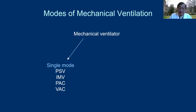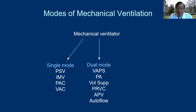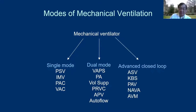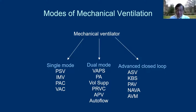Then there is the so-called dual mode — these are the VAPS mode, pressure augmentation or PA, volume support, and pressure regulated volume control (PRVC), which is pretty popular. It's called dual mode because there is a feedback loop. Most of the time tidal volume is used as a feedback parameter to maintain a minimum tidal volume. Then there's more complicated advanced closed-loop modes — adaptive support ventilation (ASV), knowledge-based systems (KBS), proportional assist, NAVA, and the adaptive ventilation mode (AVM).